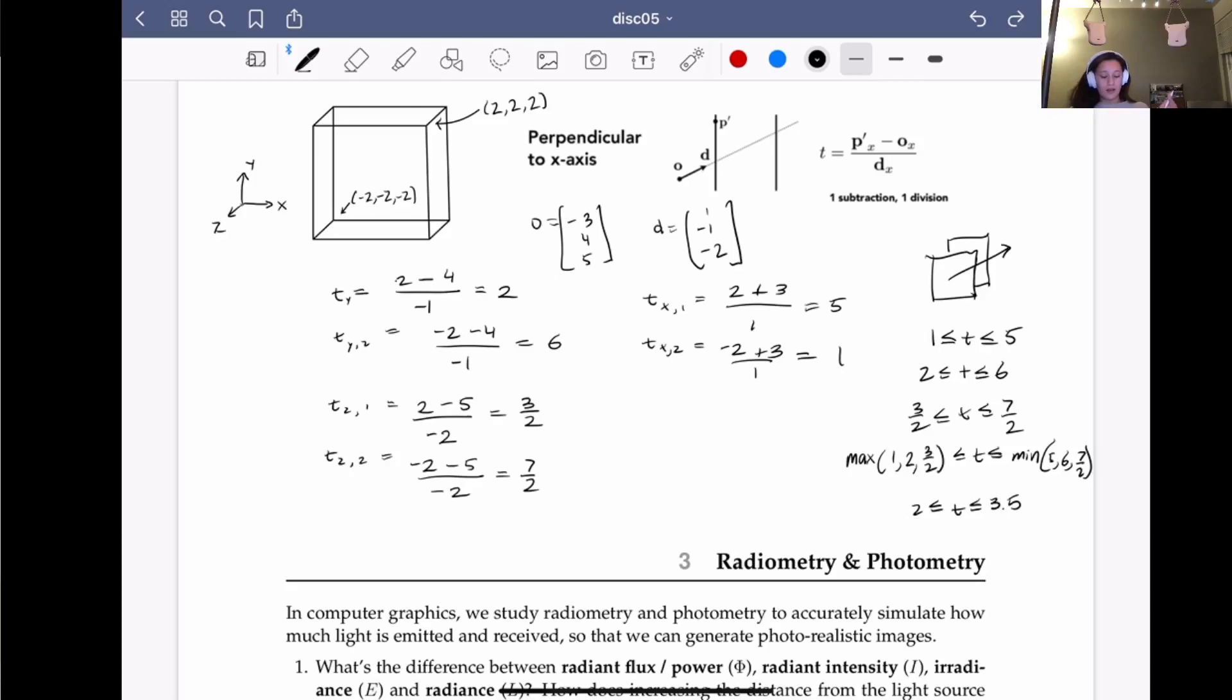And so if we want the actual points at which we enter and exit, then we need to put these t values in our ray equation. So we would just have, this is our ray equation, since they give us an origin and a direction, plus 2 times 1, negative 1, negative 2. This will be our entry. And our exit is where we have t equals 3.5. And I just ran out of space here, so I'm just not going to write it out. Cool.